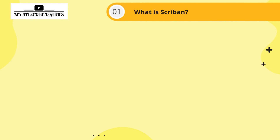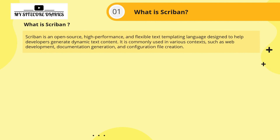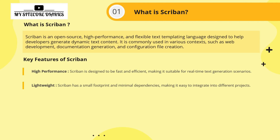What is Scriban? Scriban is an open-source, high-performance and flexible text templating language designed to help developers generate dynamic text content. It is commonly used in various contexts such as web development, documentation generation, and configuration file creation.